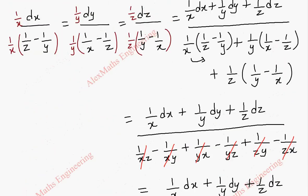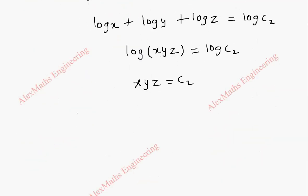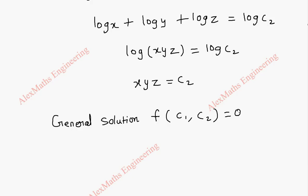So we got c₁ and c₂. The general solution is of the form f(c₁, c₂) = 0, where c₁ = x + y + z and c₂ = xyz. So we have obtained the general solution of the given partial differential equation by Lagrange's multiplier method. Thank you.